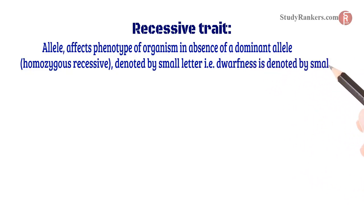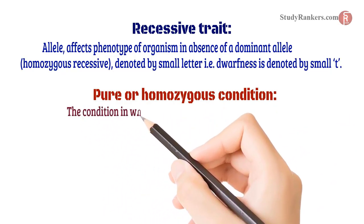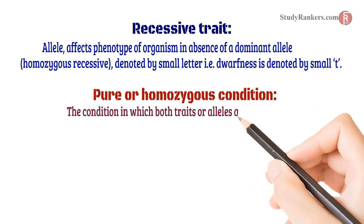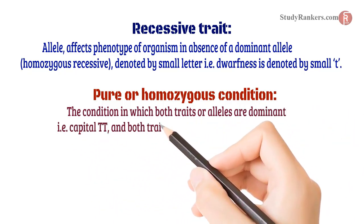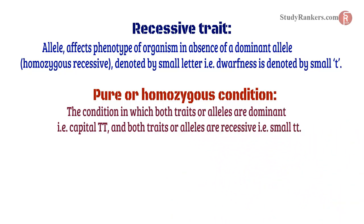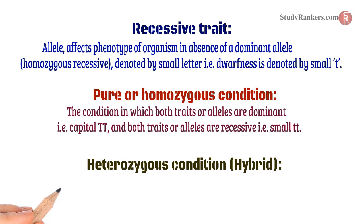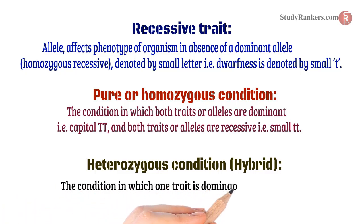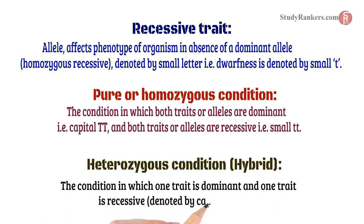Tallness is denoted by capital T. Recessive trait: an allele that affects the phenotype of an organism only in the absence of a dominant allele, i.e., in homozygous recessive condition, denoted by a small letter. Dwarfness is denoted by small t. Pure or homozygous condition: the condition in which both alleles are dominant (capital TT) or both alleles are recessive (small tt). Heterozygous or Hybrid condition: the condition in which one allele is dominant and one is recessive, denoted by capital T and small t.